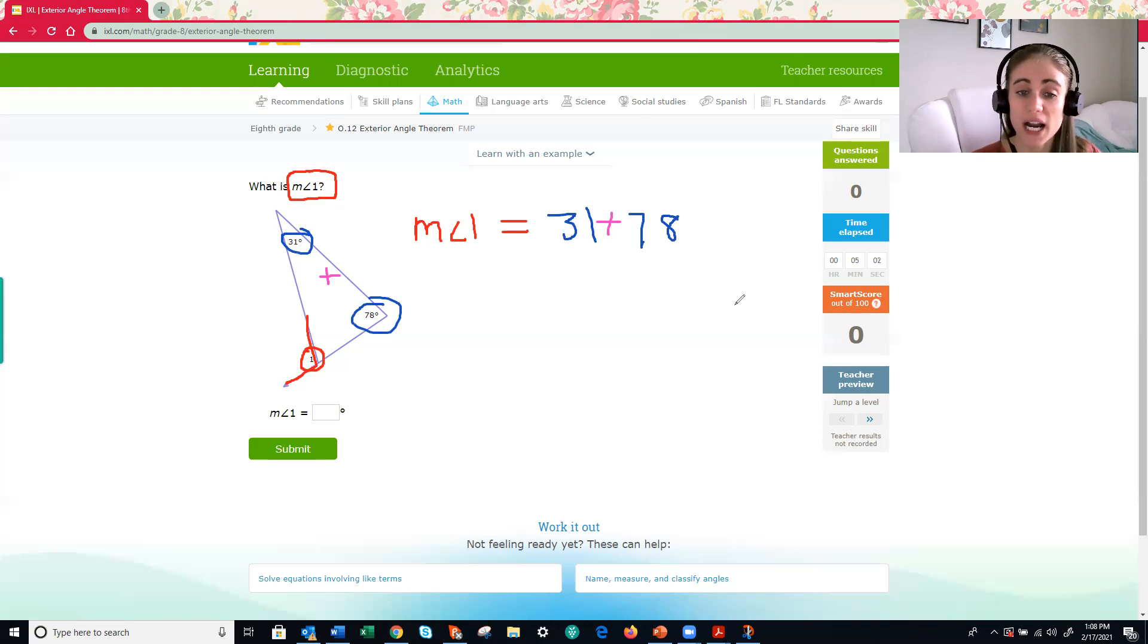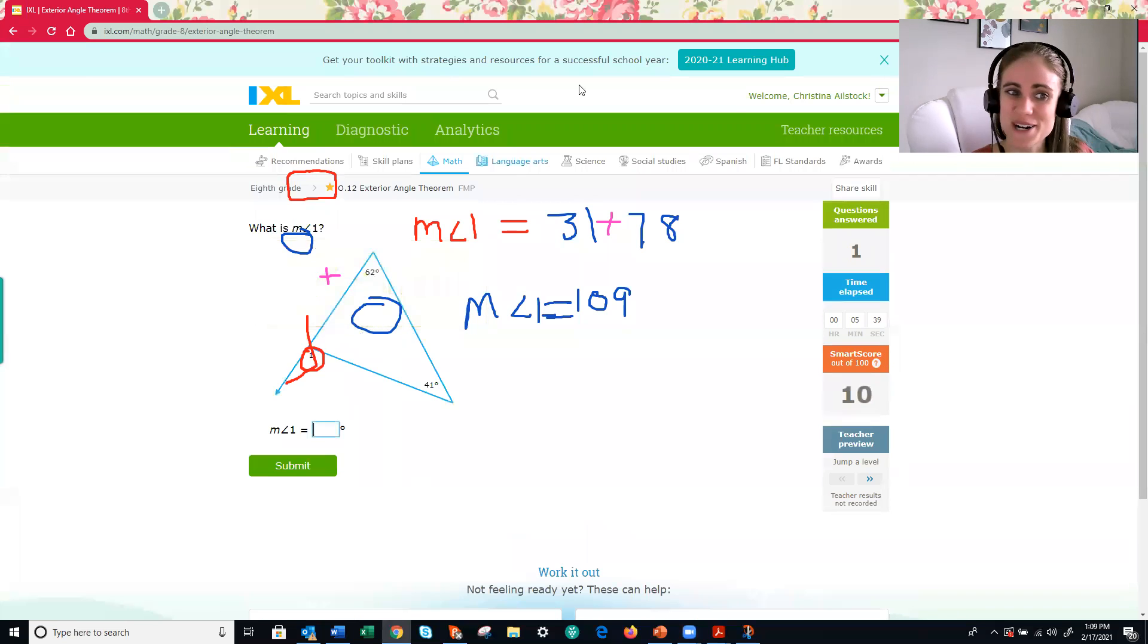That means to find my missing exterior angle, I just need to add these two numbers together. So what would be 31 plus 78? 31 plus 78 is 109. And hopefully I gave you enough time to answer that. Let's make that more like an equal sign. There we go. And that's our answer. Let's make sure we're correct. And we are awesome.